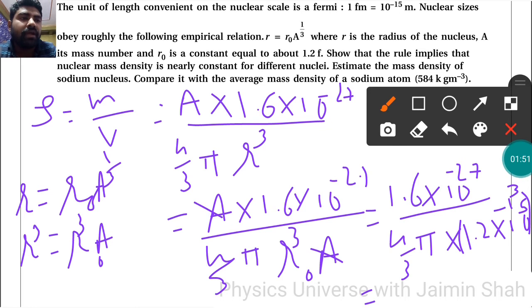By calculating all the terms we will get density. This is the mass density of sodium nucleus. We have to compare it with the average mass density of a sodium atom, which is 584 kg/m³.